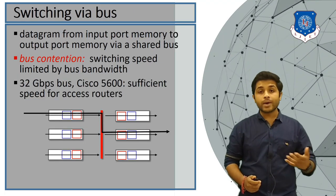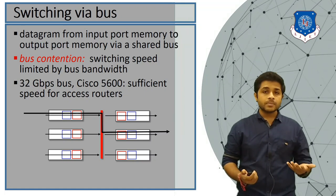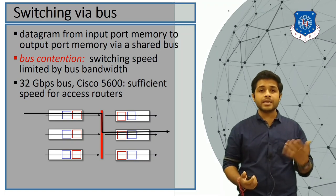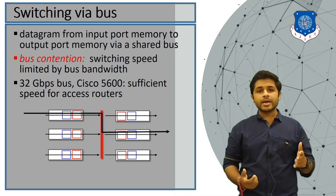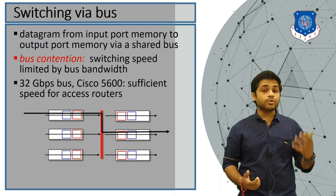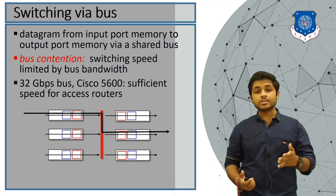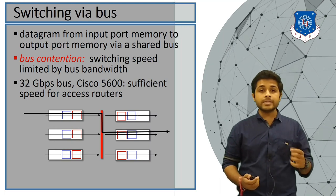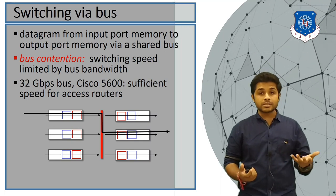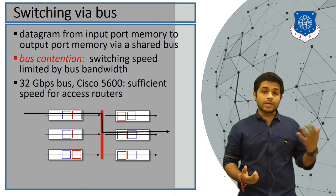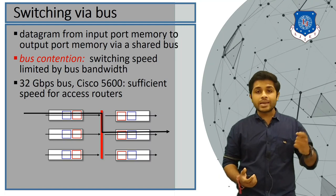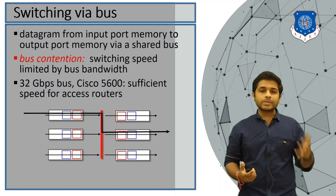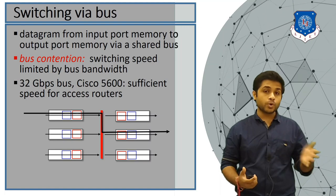The next type is the switching via bus. A bus is simply a group of wires, and the bus size can be 8 bits, 16 bits, etc. When packets are received at the input port, they are transferred to the bus, and using the bus the packet is transferred to the output port. The switching speed is limited by the bus bandwidth. If the bandwidth of the bus is limited, it will take more time; if the bus has very high speed, data transfer from input to output port will be very fast.